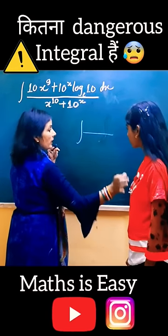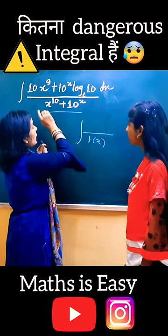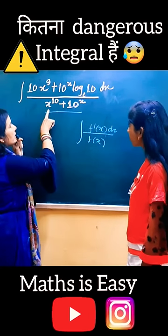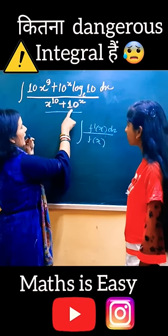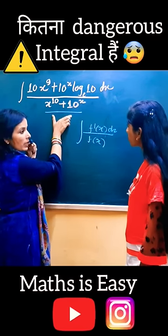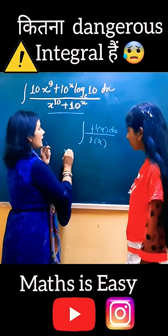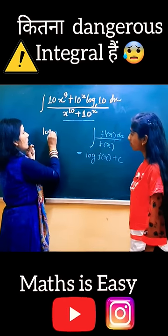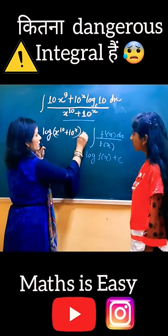If you see any question where the function below is the function and the derivative of this function is present above — for example, if you differentiate 10^x, then 10x^9 comes. That means the derivative of the term is above. If the integral is of this type, it's a direct integral. So our function is the answer: log(x^10) + 10^x + integral constant c.